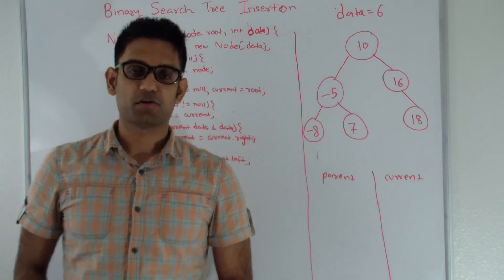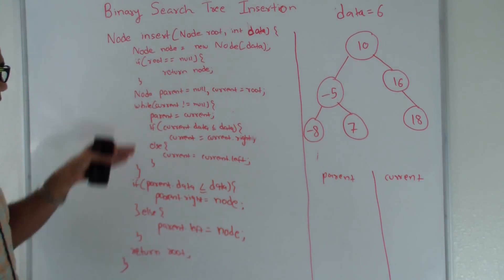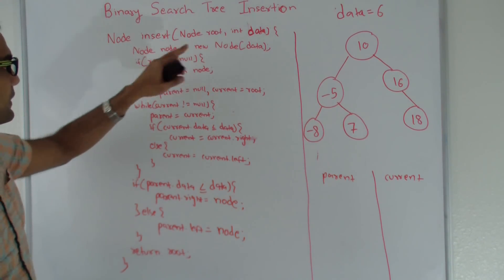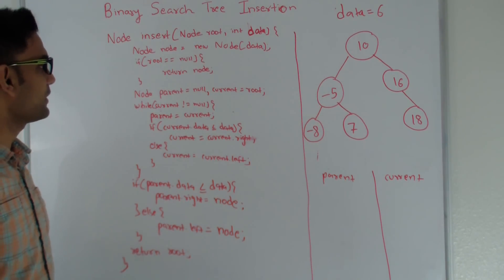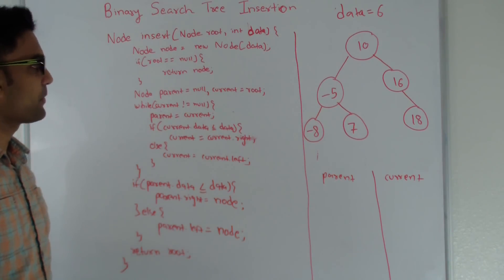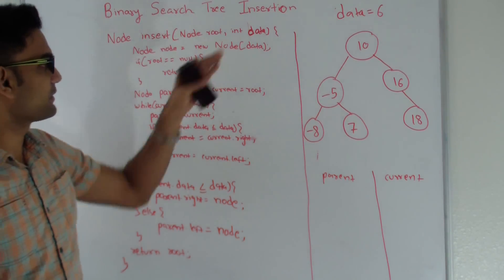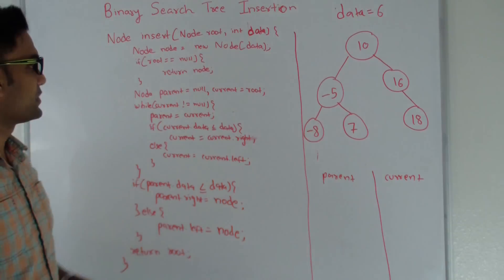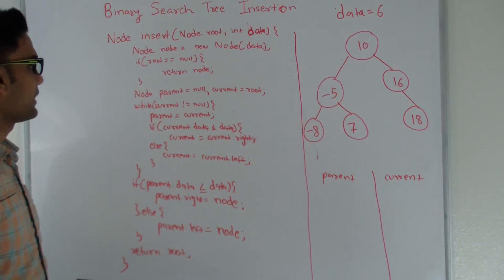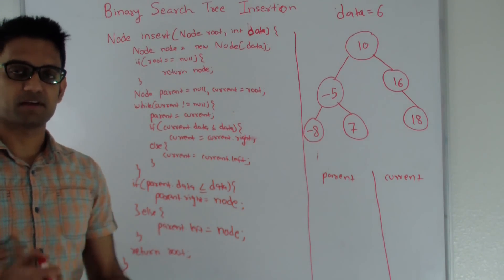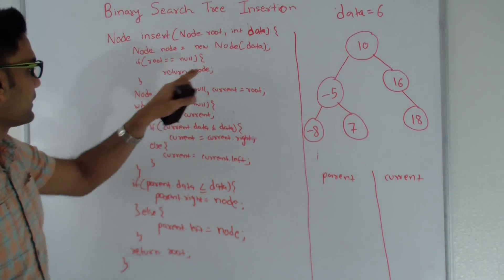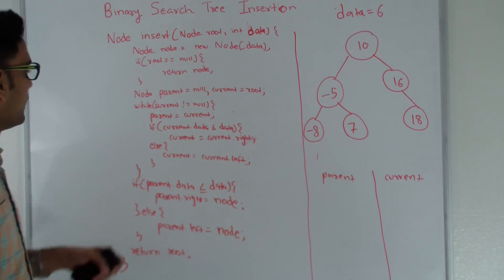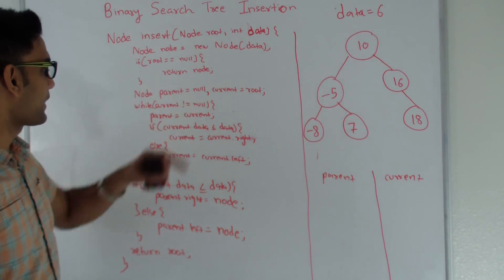Here is the code for insertion into a binary search tree. The name of the function is insert and it takes two parameters: root and data. Root is the root of the binary search tree and data is the value that needs to be inserted. We create a new node with the data. Then we check if root is null — if it is, it means the tree was empty and we directly return the node, and the calling function makes this node the root.